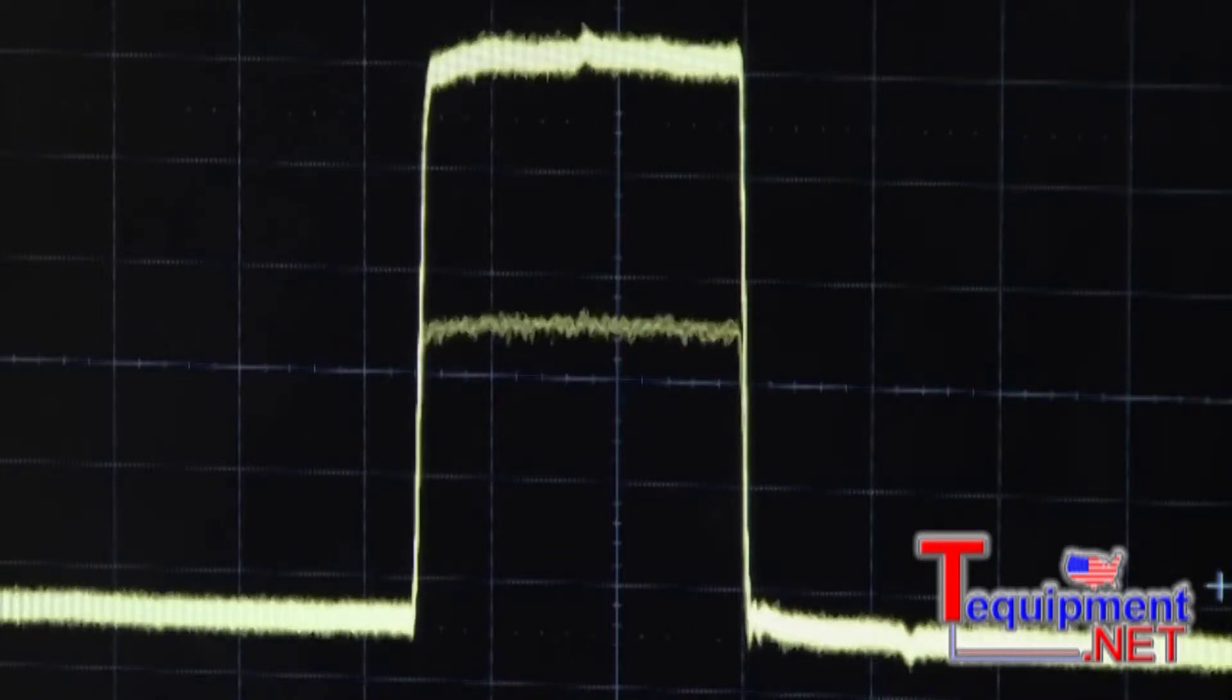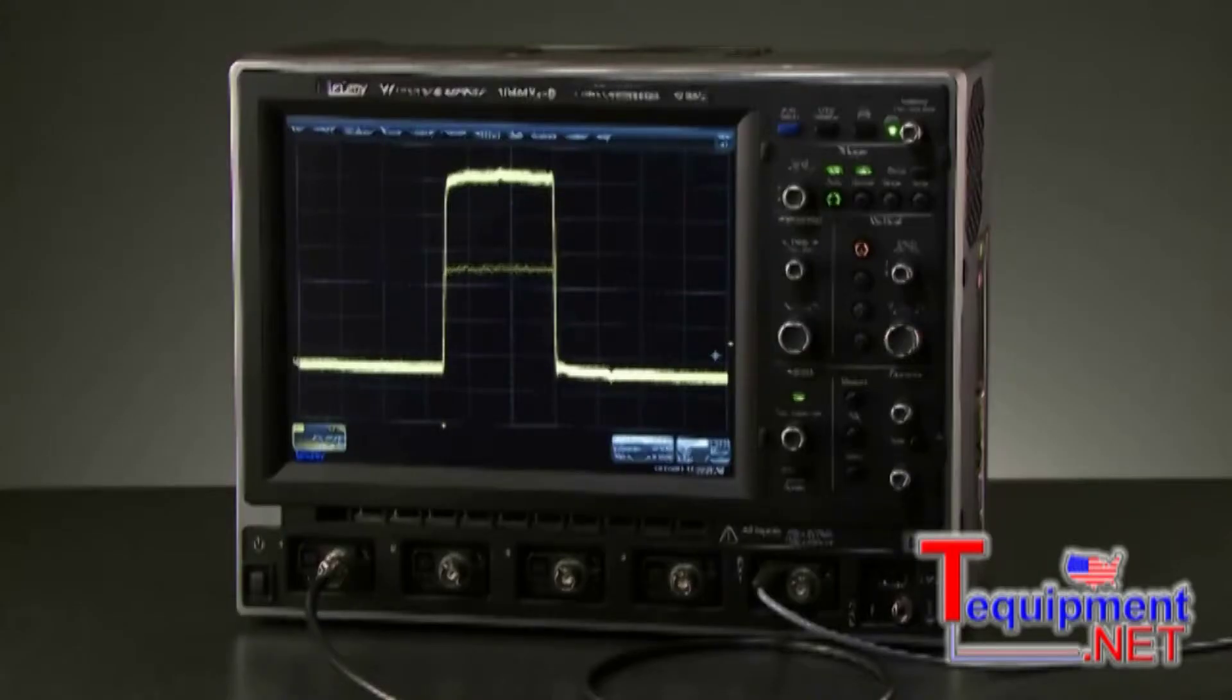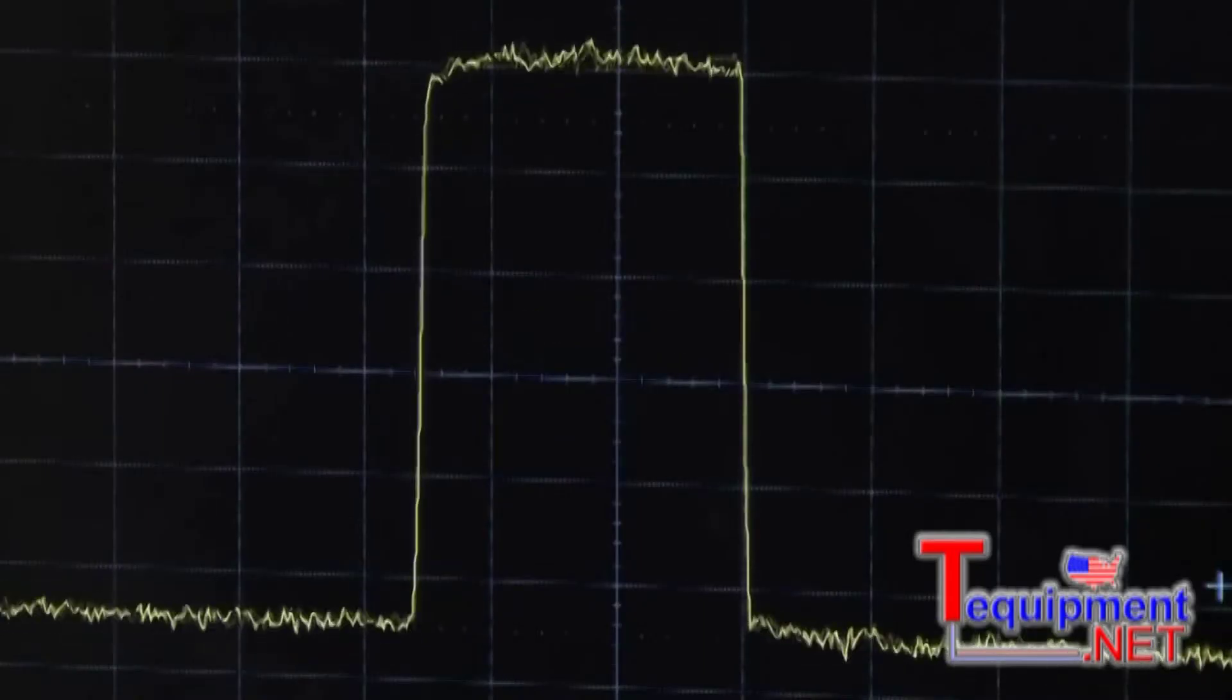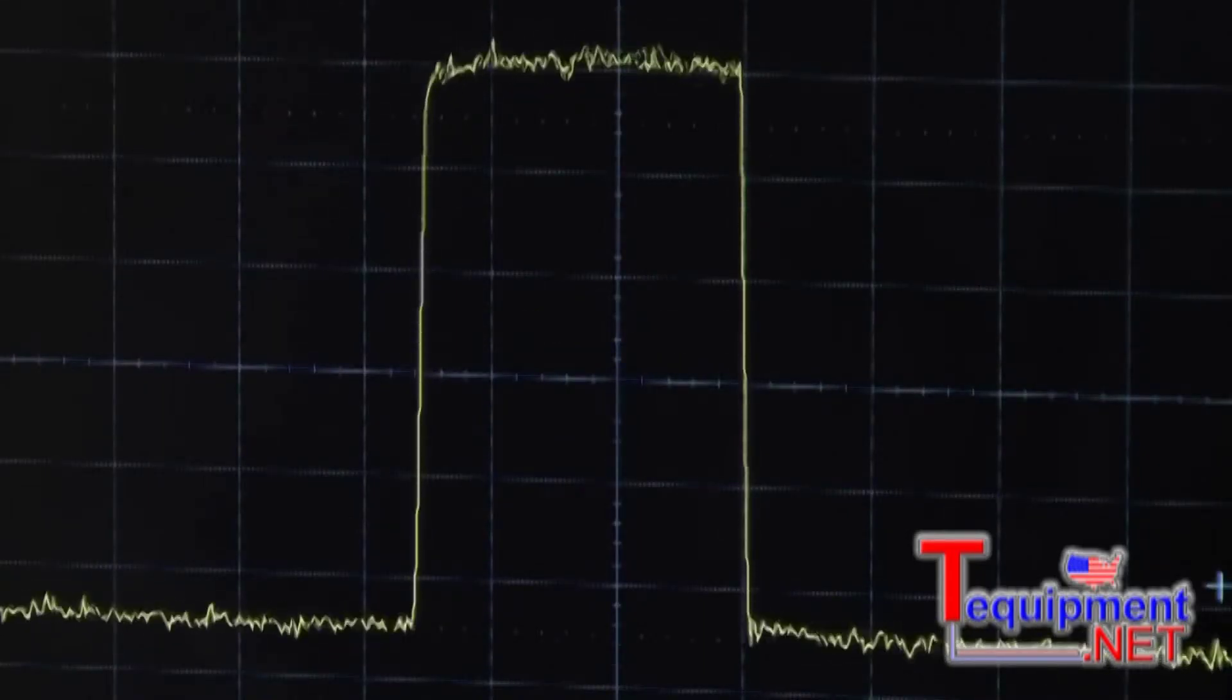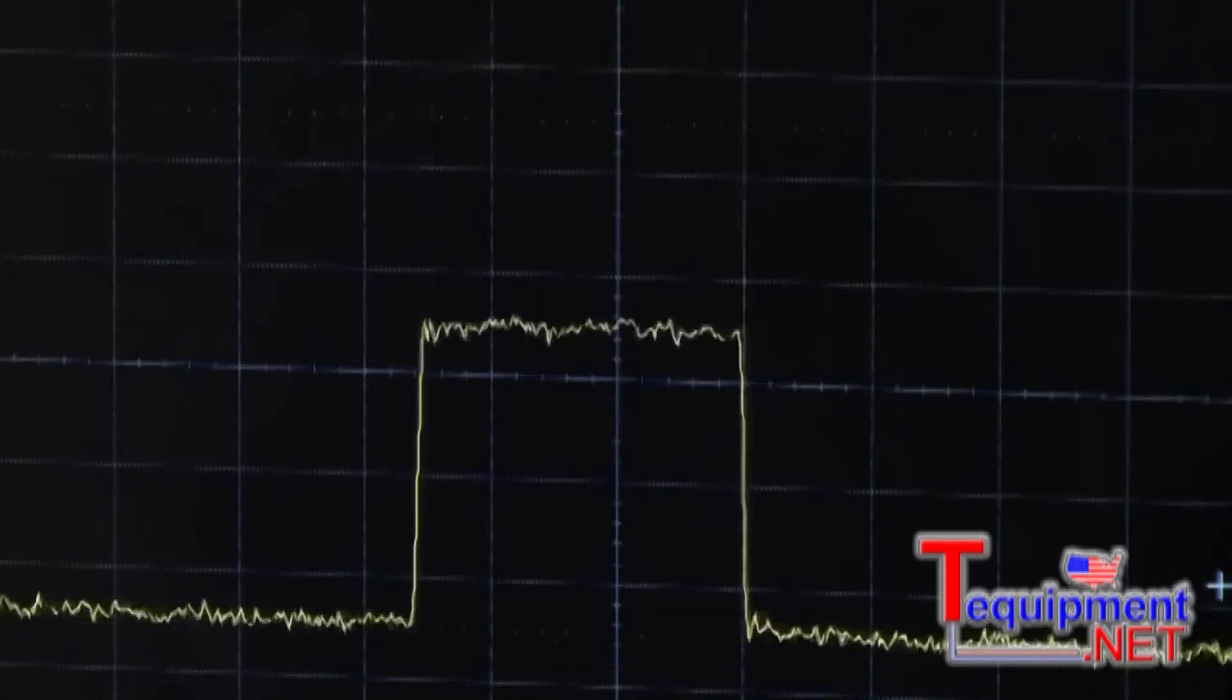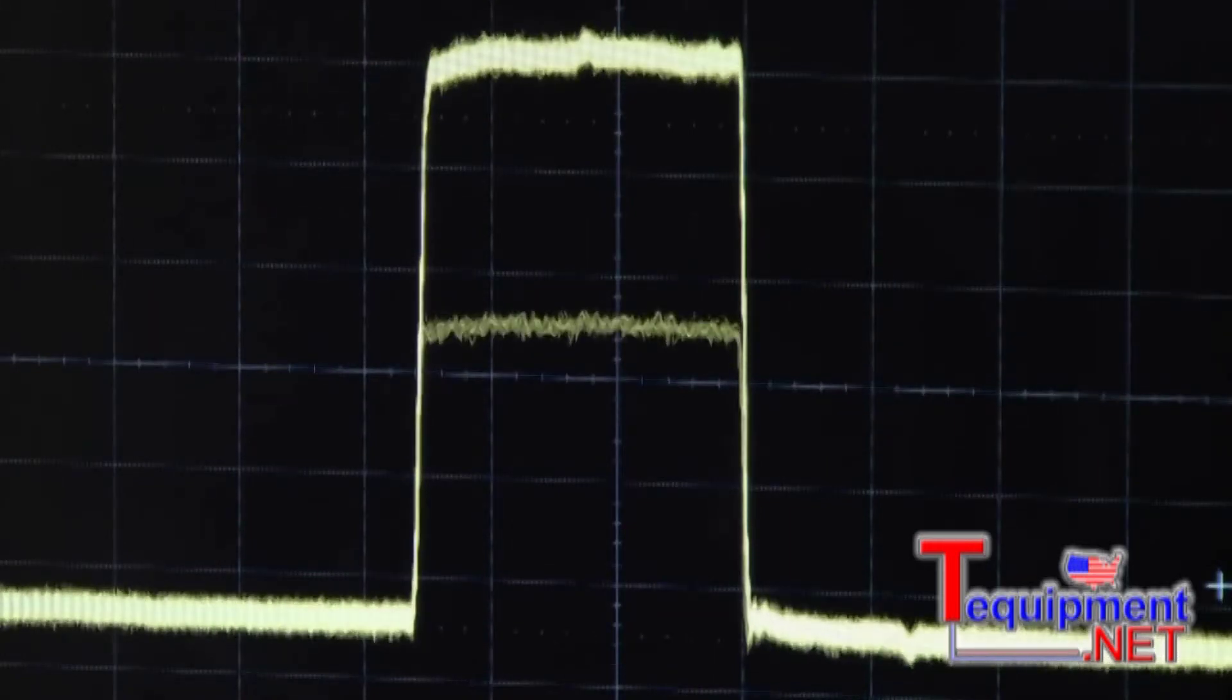Many oscilloscopes offer a fast update, but only LeCroy offers this mode to be toggled on and off for optimal use. Other instruments work exclusively in this mode, forcing the user to accept trade-offs while making other measurements.